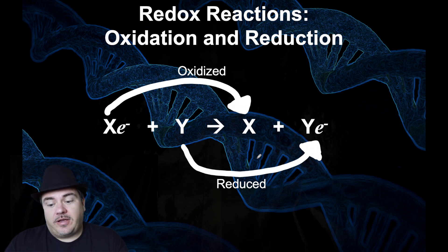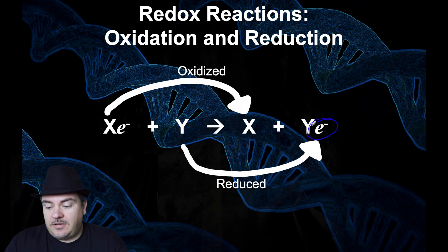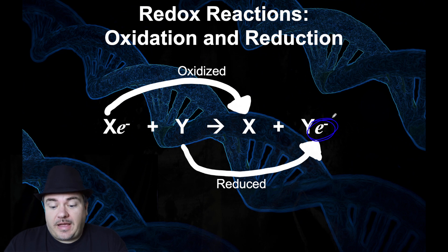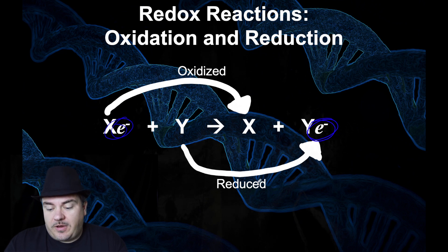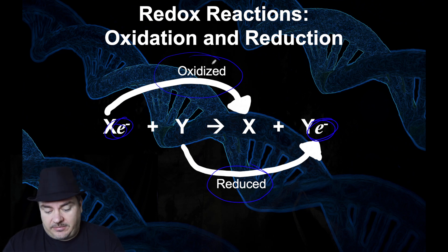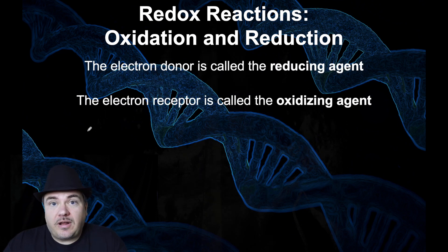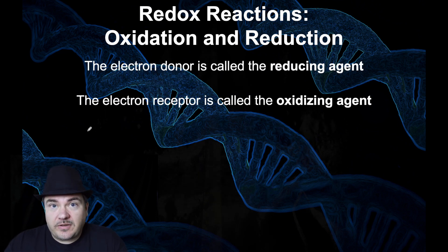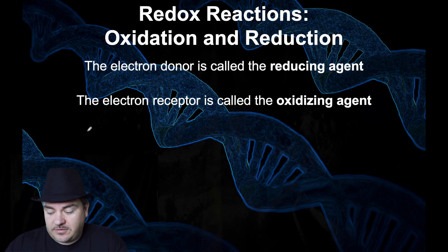An oxidation is any time you lose an electron; a reduction is any time you gain an electron. The two together are called redox reactions. The reason we call it a redox reaction is because they always have to happen together — anytime somebody gains an electron, that electron had to come from somewhere, which means somebody had to lose an electron. So anytime you have a reduction, you have to have an oxidation at the same time. In a redox reaction, the electron donor is called the reducing agent and the electron receptor is called the oxidizing agent.